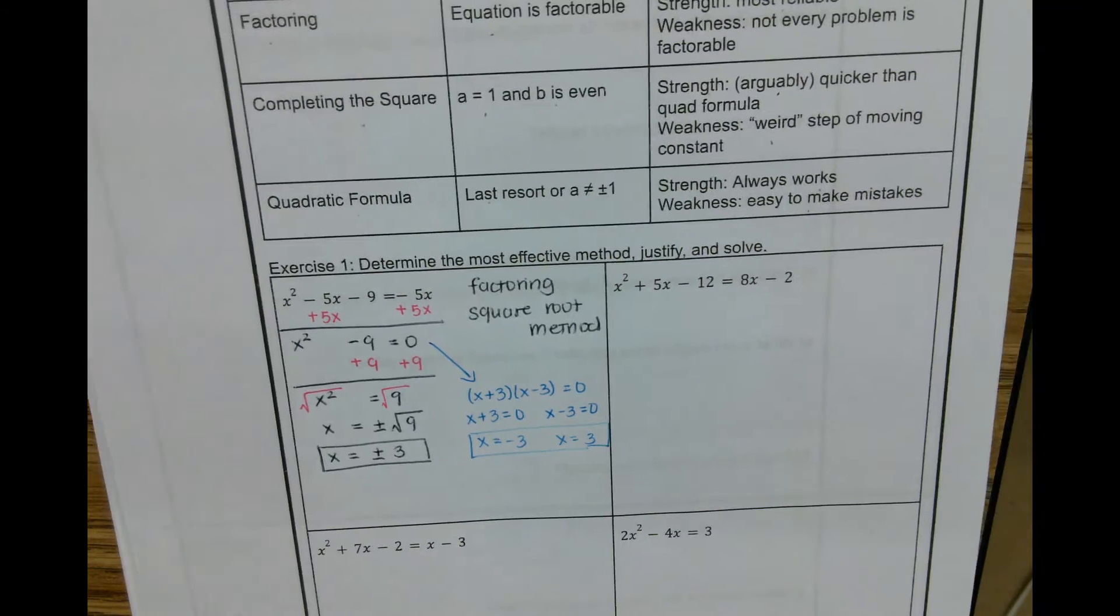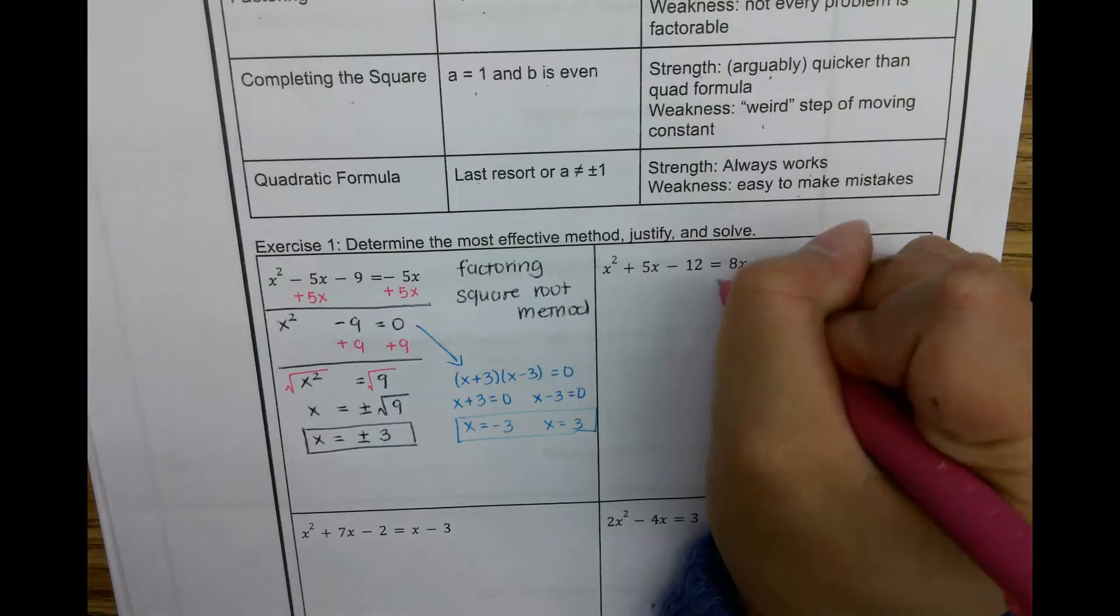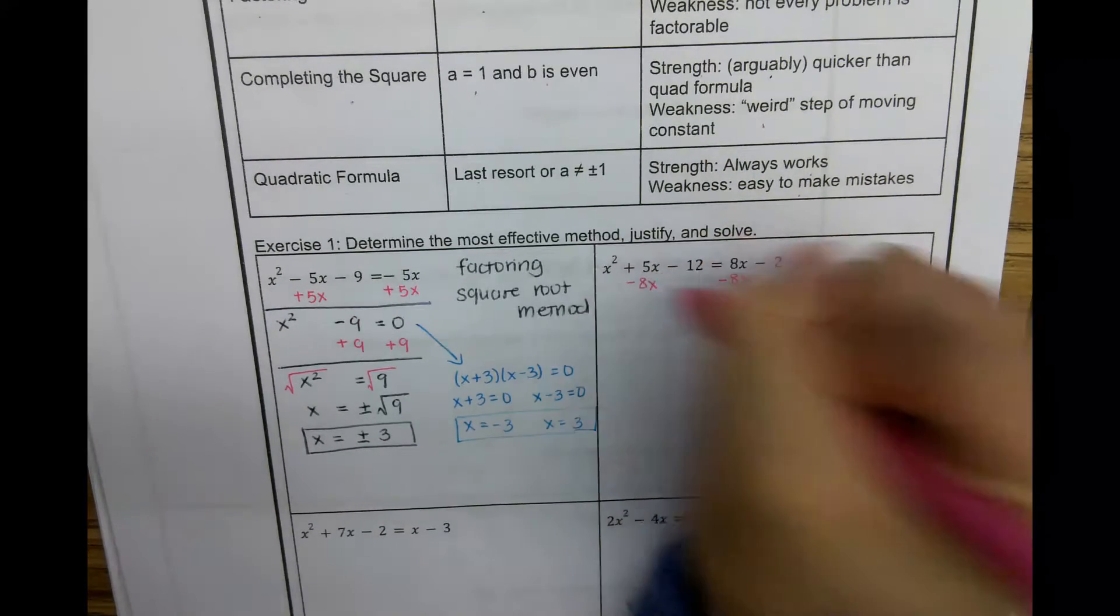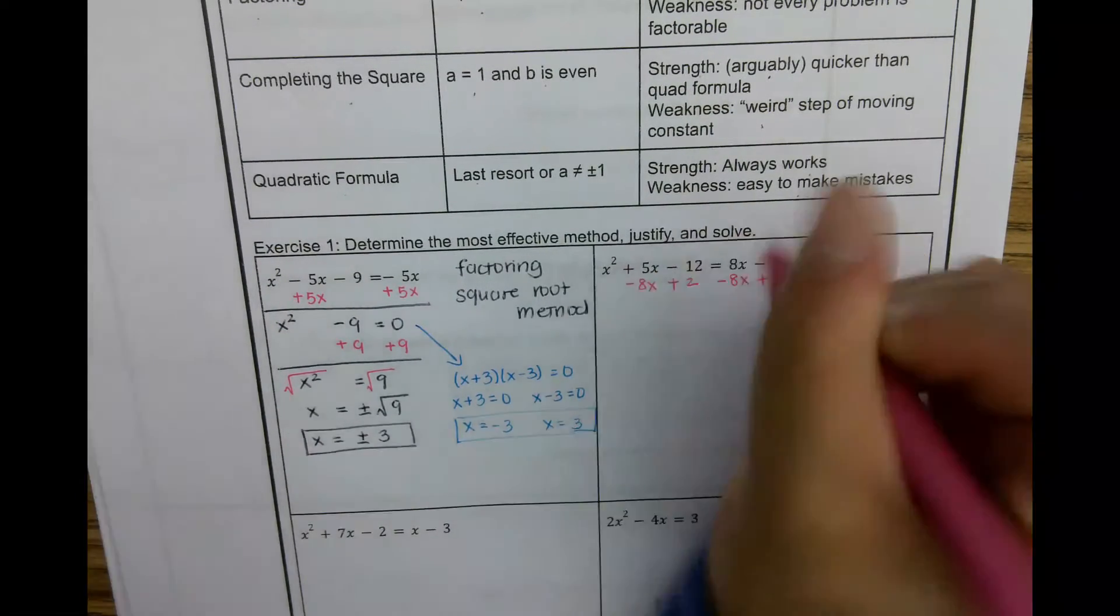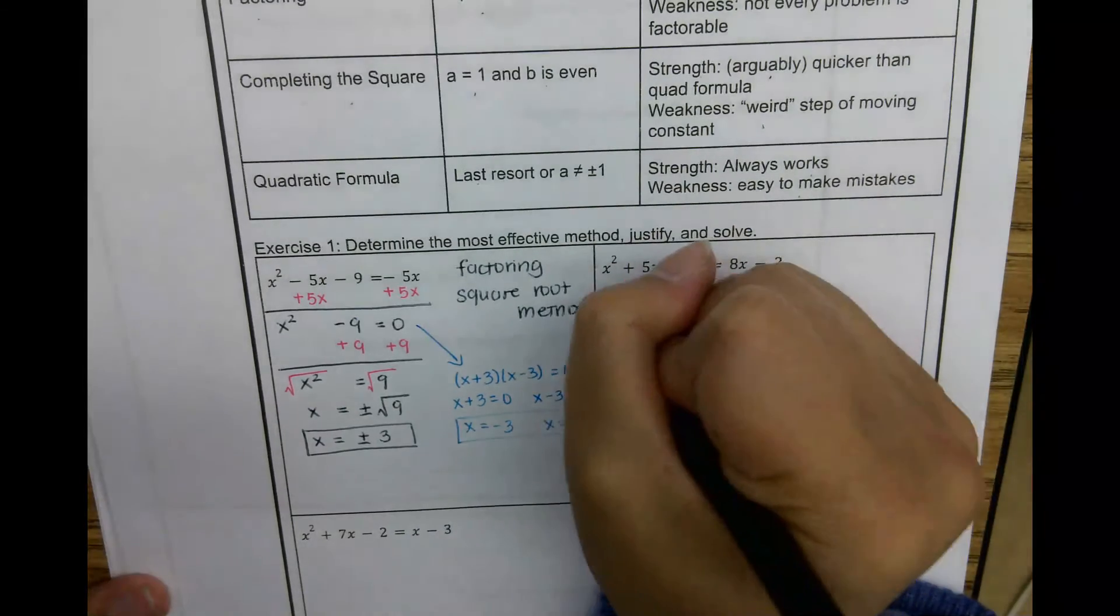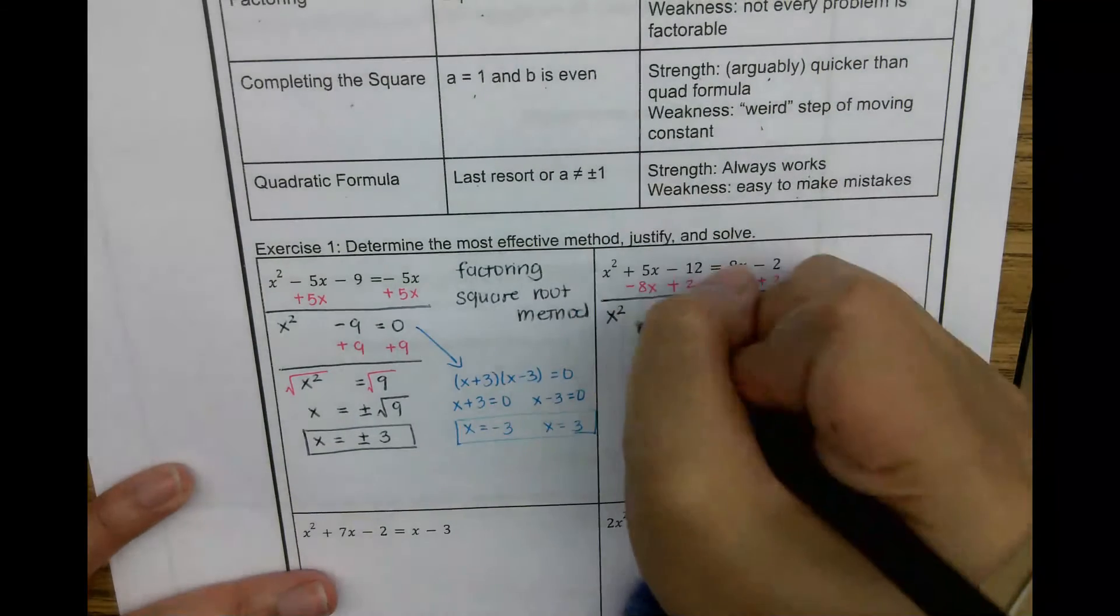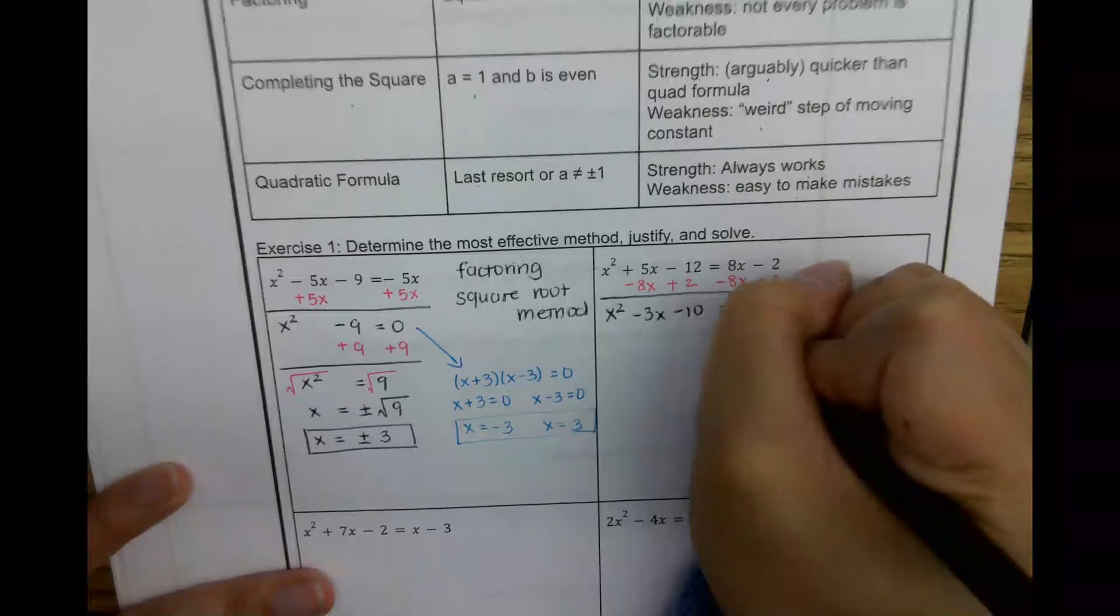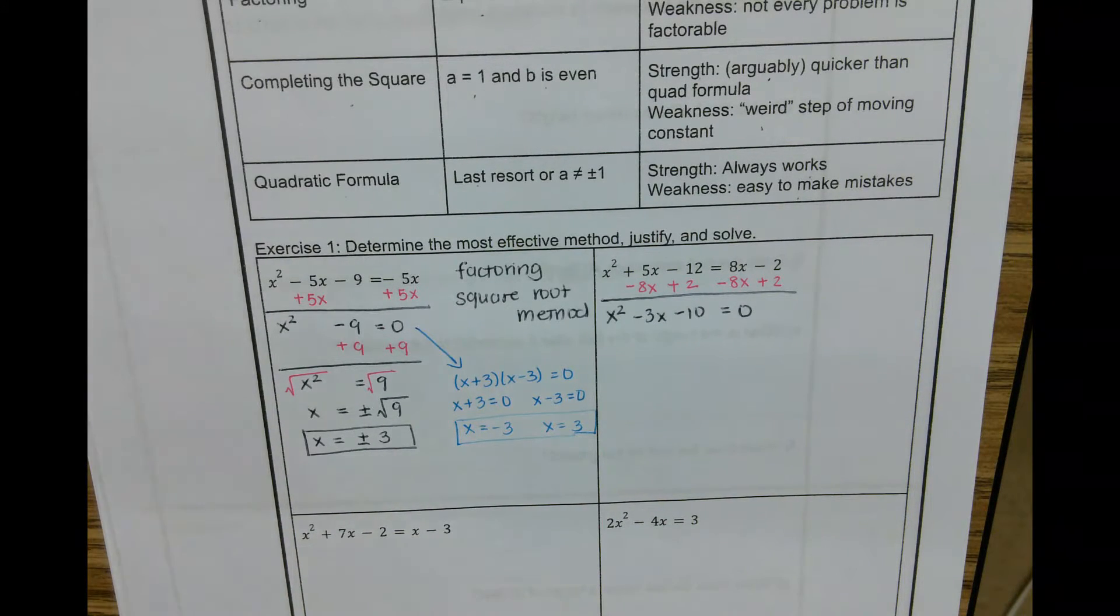So here's the second one. I'm going to move everything to one side. So I'm going to move this 8x over. Since it's a positive 8x, I'm going to subtract it over. Since this is a minus 2, I'm going to move it over by adding 2. This leaves me with x squared. 5x minus 8x is negative 3x. And then negative 12 plus 2 is negative 10 equals 0. 8x minus 8x is 0. Negative 2 plus 2 is 0.